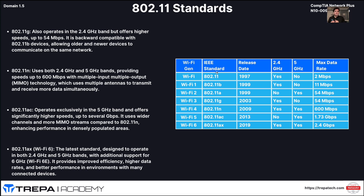In 2009 we got 802.11n, Wi-Fi 4, which gave us both frequency ranges — 2.4 and 5 GHz — getting up to 600 Mbps. Then we had Wi-Fi 5, 802.11ac, which was just the 5 GHz range. With that, we had some improvement in distance coverage. Even though 5 GHz can't go through objects as well, if you put more wattage and more power, you can increase that range. Our access points kind of caught up to that with Wi-Fi 5, 802.11ac.